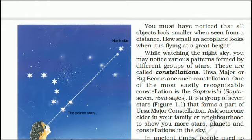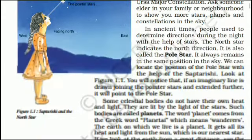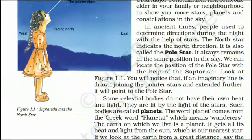In ancient times, people used to determine directions during the night with the help of stars. The north star indicates the north direction. It is also called the pole star. It always remains in the same position in the sky. We can locate the position of the pole star with the help of the Saptrishi. If an imaginary line is drawn joining the pointer stars and extended further, it will point to the pole star.